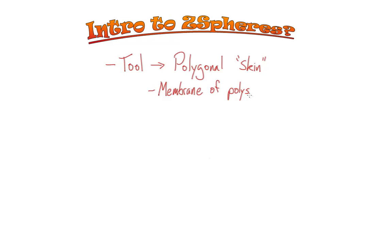What you're going to do is create a model that will be defined by the position, orientation, and scale of a hierarchy of Z-Spheres.